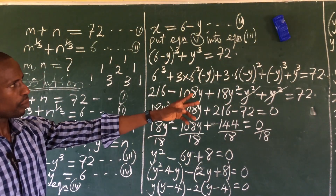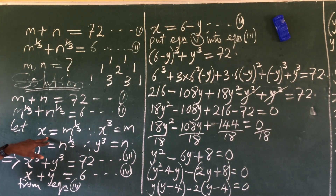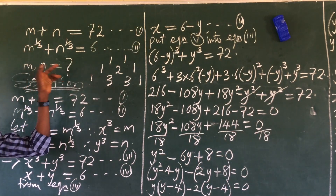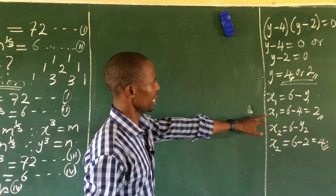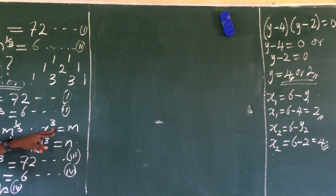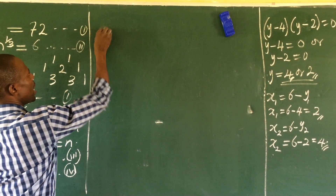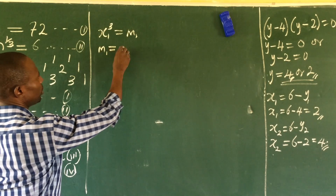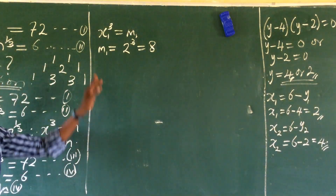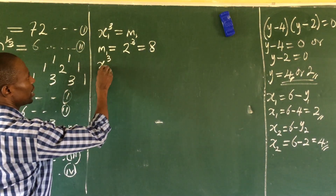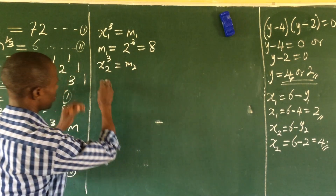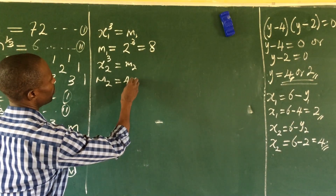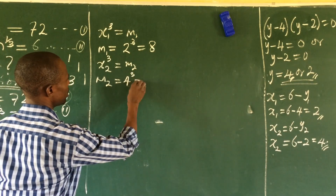Since x = m^(1/3), we have x³ = m. So m₁ = x₁³ = 2³ = 8, and m₂ = x₂³ = 4³ = 64.